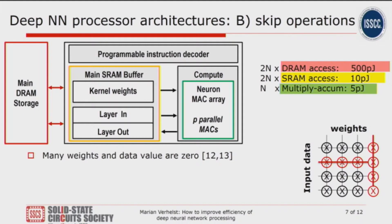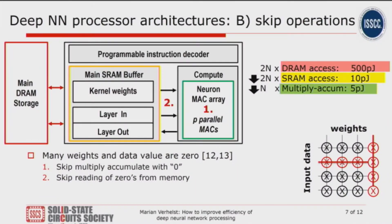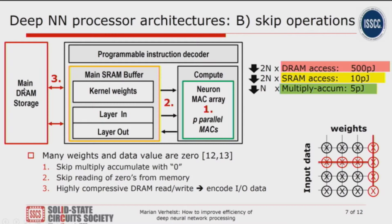The second pillar is skipping operations that are not strictly necessary. In deep neural networks, many weights and data values turn out to be zero, and a multiply-accumulate with zero is the same as doing nothing, so you can skip it. Some implementations also avoid fetching zero-valued data words from SRAM using smart guarded patches, and because there will be many zeros in the SRAM buffer, the loading and unloading of data will be highly compressible via a smart DMA that encodes data with far fewer bits.